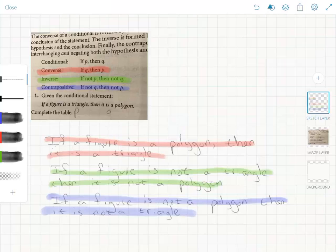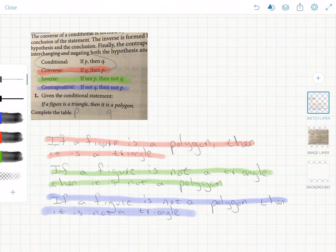A given conditional statement may or may not be true. In this case, it is. If a figure is a triangle, then it is a polygon. That's a true statement. So we can put a little T right by that one.